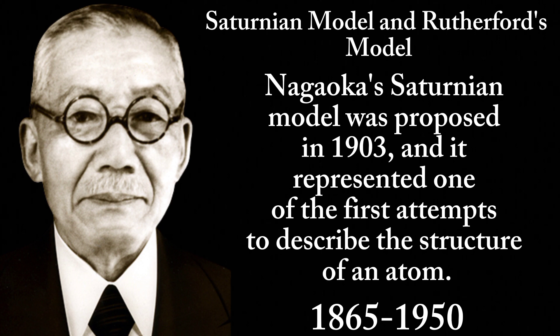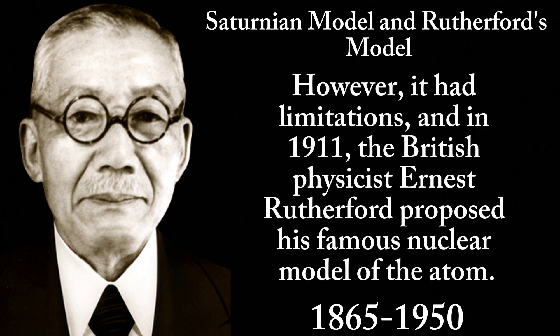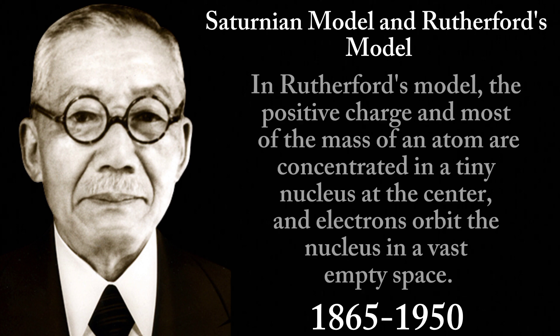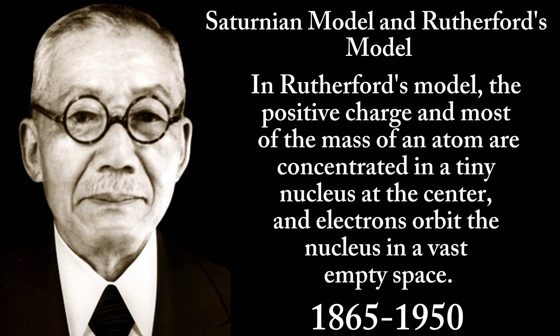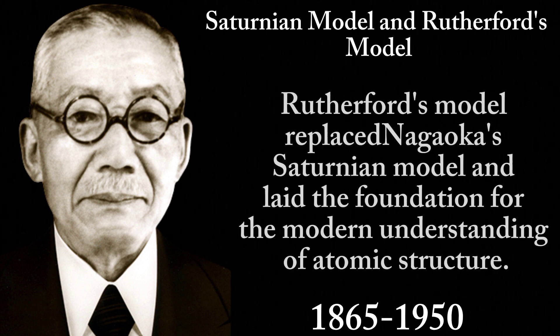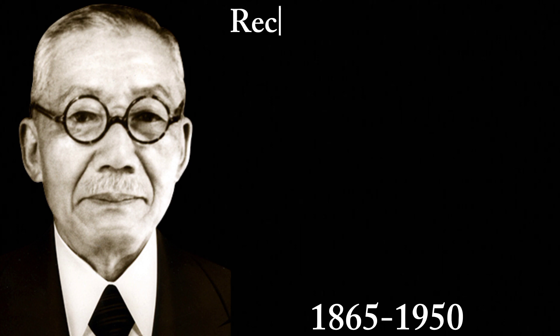Nagaoka's Saturnian model was proposed in 1903 and represented one of the first attempts to describe the structure of an atom. However, it had limitations, and in 1911 the British physicist Ernest Rutherford proposed his famous nuclear model of the atom. In Rutherford's model, the positive charge and most of the mass of an atom are concentrated in a tiny nucleus at the center, with electrons orbiting in a vast empty space. Rutherford's model replaced Nagaoka's Saturnian model and laid the foundation for the modern understanding of atomic structure.